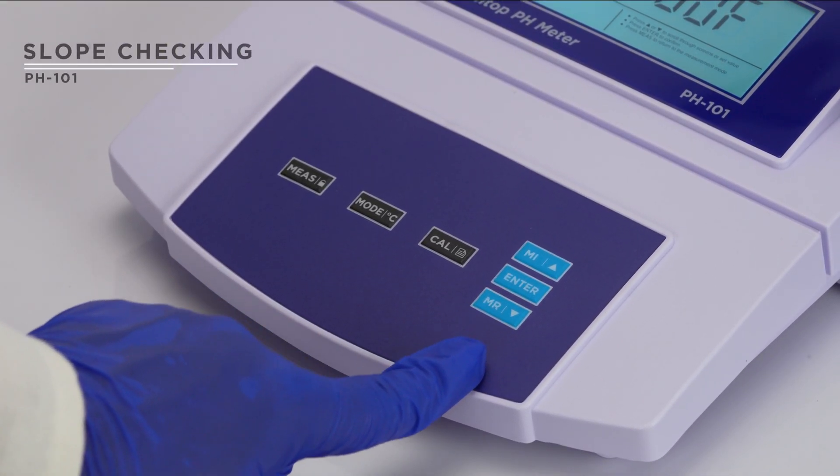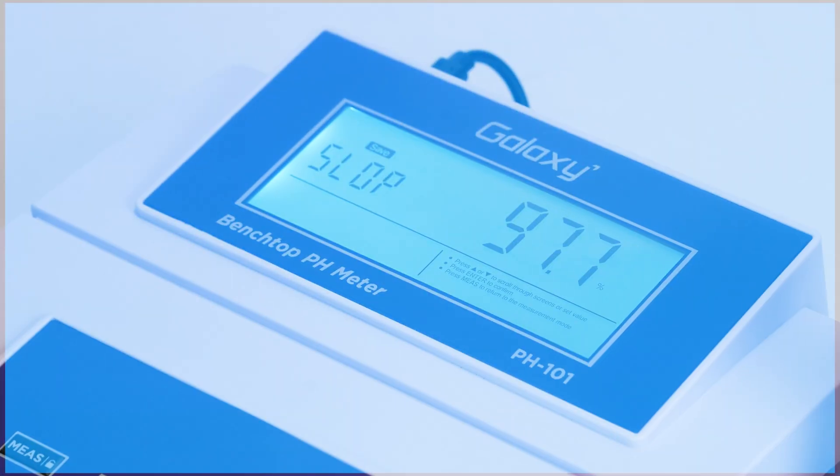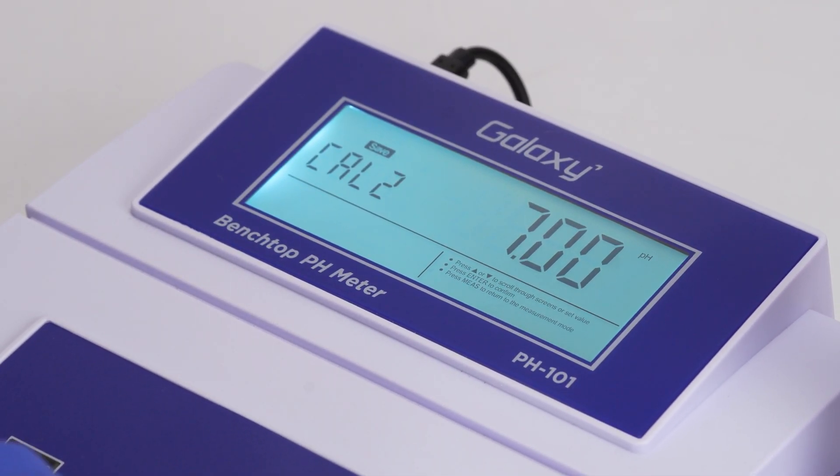Press the MR key twice, then press enter. After that, press the MR key again to check the slope of the electrode following the calibration.